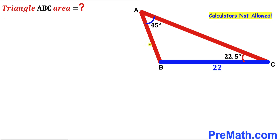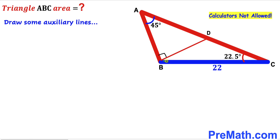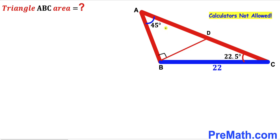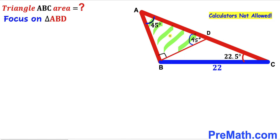Let's go ahead and get started. We are going to draw some auxiliary lines to make our job simple. I have drawn segment BD such that angle ABD is 90 degrees. We know the sum of three interior angles in a triangle is 180 degrees. Since angle BAC is 45 degrees and angle ABD is 90 degrees, this remaining angle must be 45 degrees as well. Triangle ABD is an isosceles triangle since both base angles are 45 degrees.